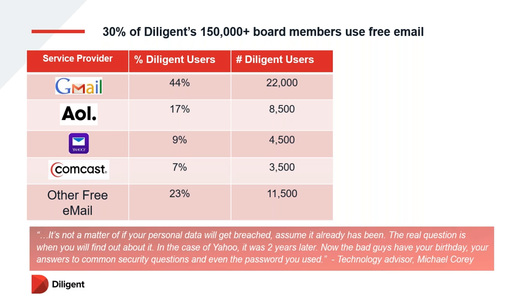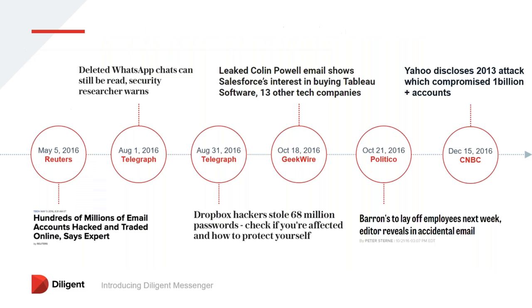Many of the businesses we are talking to in the cybersecurity space are actually failing to implement some form of two-factor authentication or requiring password changes, despite the fact that this would eliminate a lot of the security risks. One of the things we're doing with our core products and also with Diligent Messenger is to activate device authentication. So if a board member or executive has the same username and password for everything and information is breached through a social media account, with Diligent they can only access the information via one of the devices that we've actually assigned to their profile.